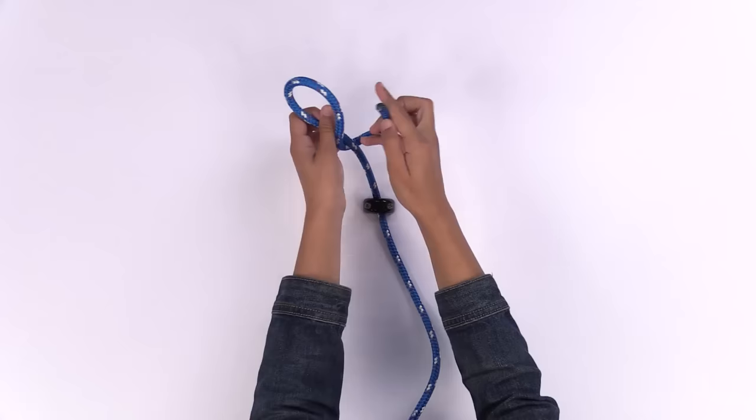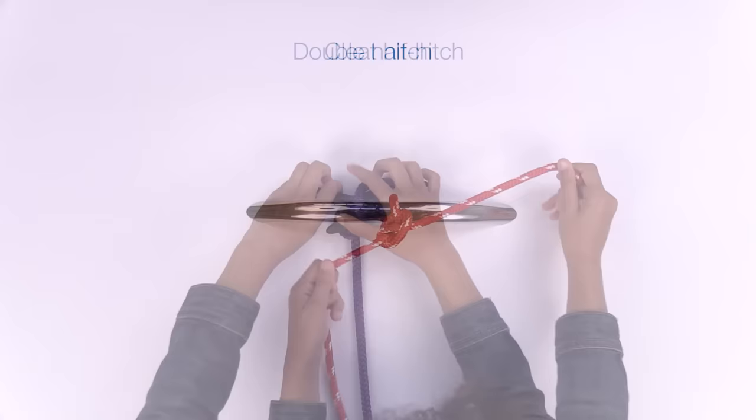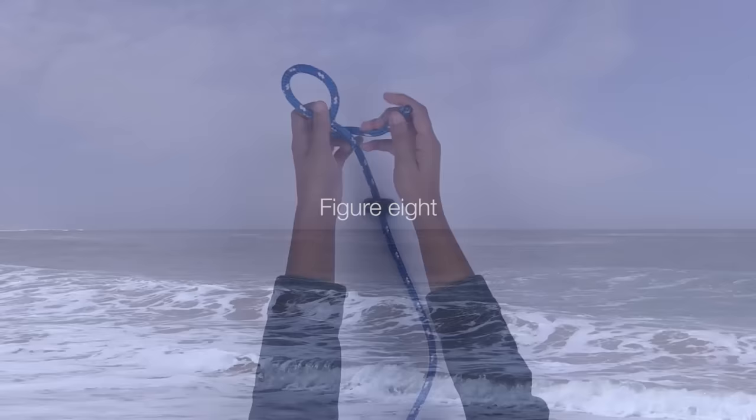The knots we are going to show you are a figure eight knot, a half hitch, a double half hitch, a cleat hitch, and a square knot. So let's start with a figure eight knot.